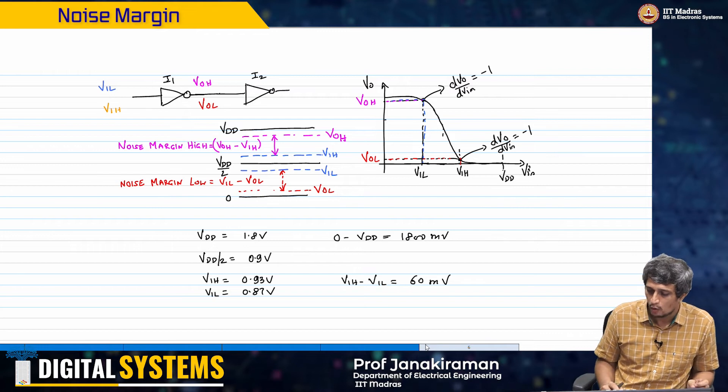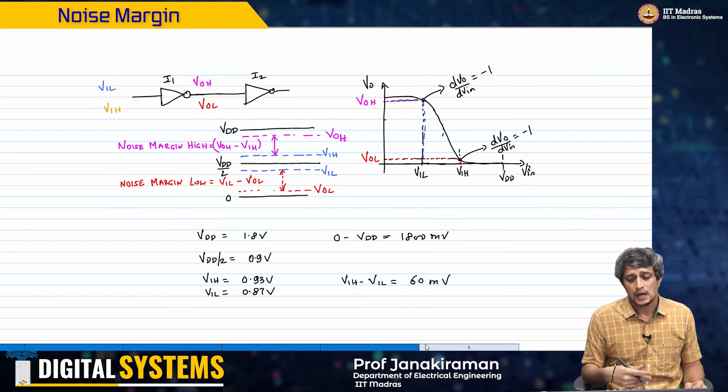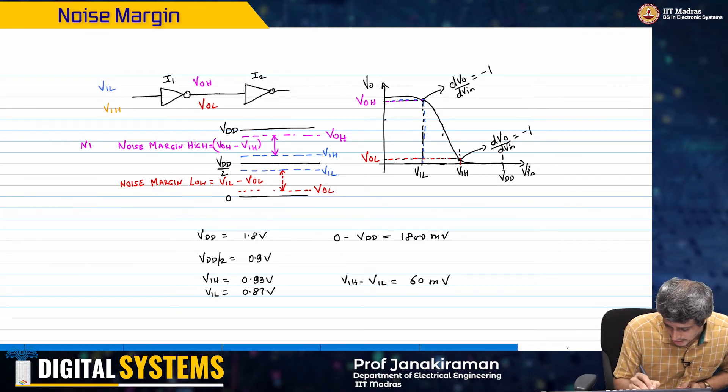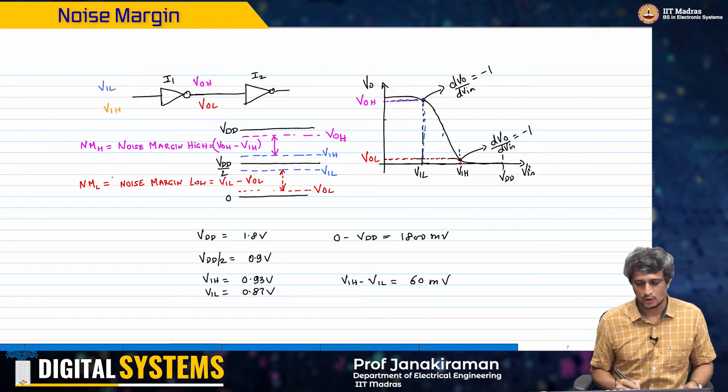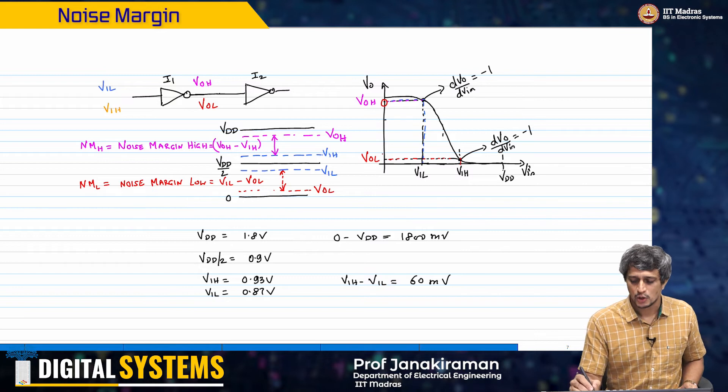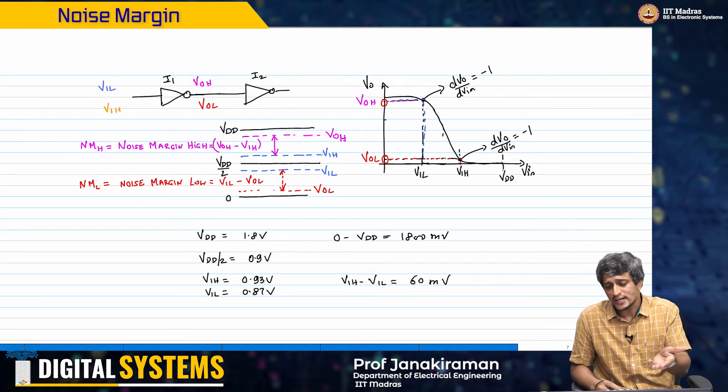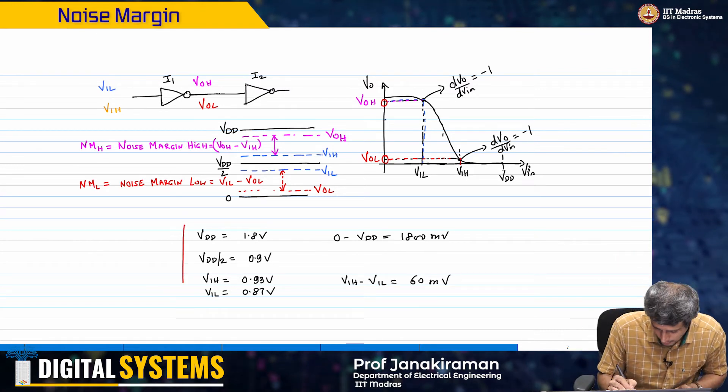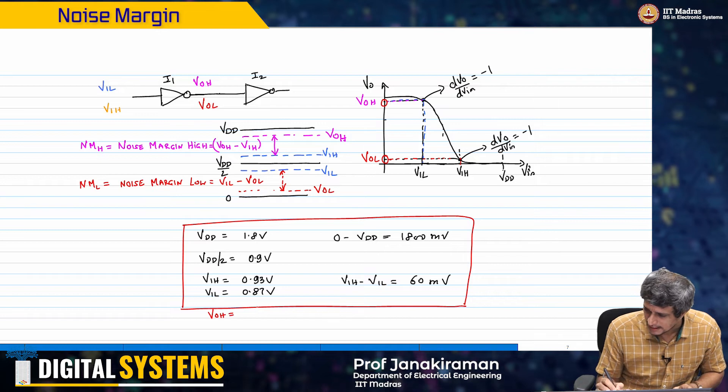Effectively what you see is that the noise margins are actually very high. The NMH - this is abbreviated as NMH and this is abbreviated as NML - clearly from the curve you can see that VOH and VOL are actually almost rails. If you look at the noise margin, if you say VOH is VDD, nearly VDD, and you take this example, I can approximate VOH as VDD and VOL as ground.